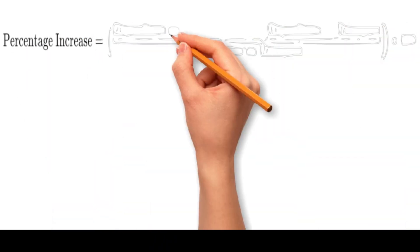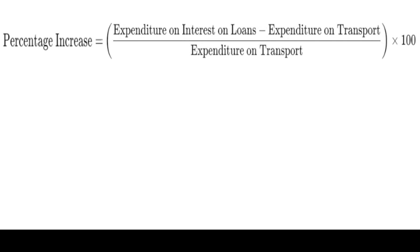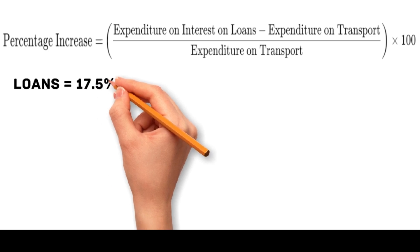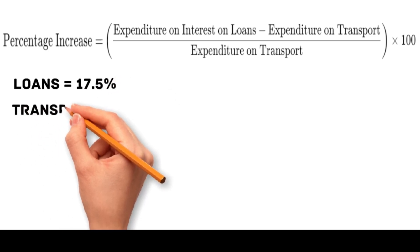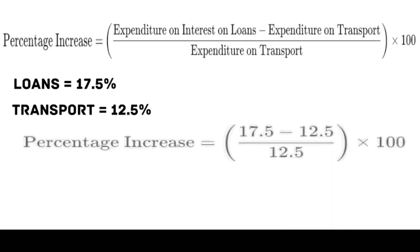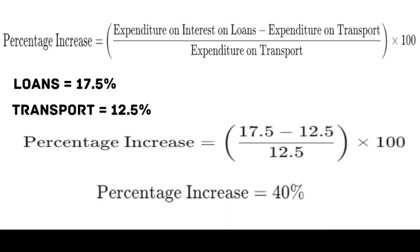To determine by what percent the expenditures on interest on loans are more than the expenditures on transport, we use the formula: percentage increase = (expenditure on interest on loans − expenditure on transport) / expenditure on transport × 100. From the bar graph, interest on loans is 17.5% and transport is 12.5%. Substituting: (17.5 − 12.5) / 12.5 × 100 = 40%. Therefore the correct answer is b, 40%.